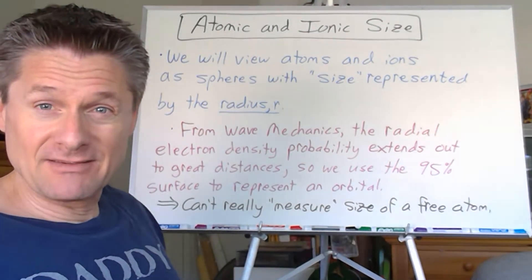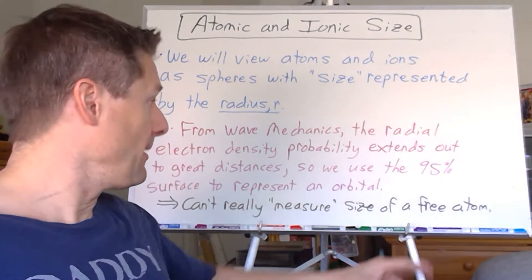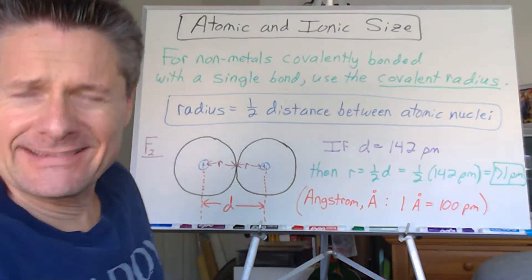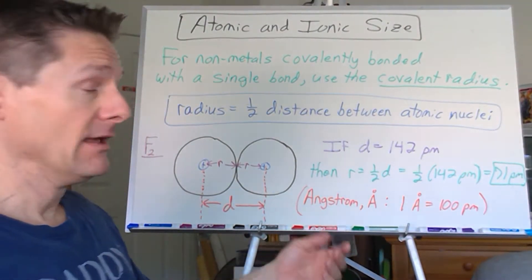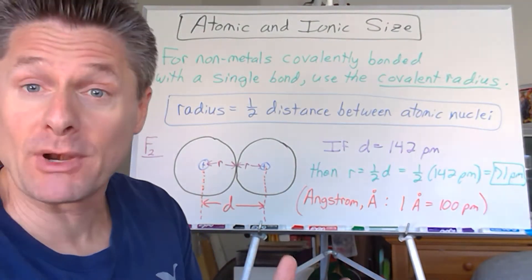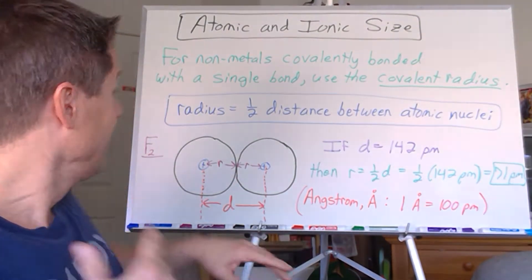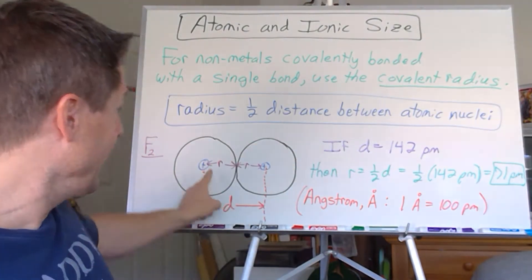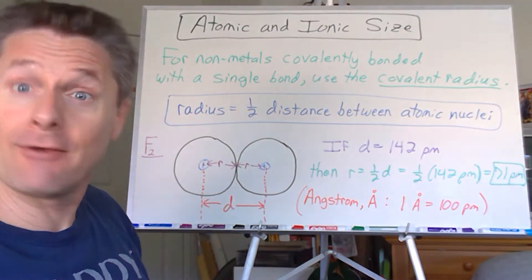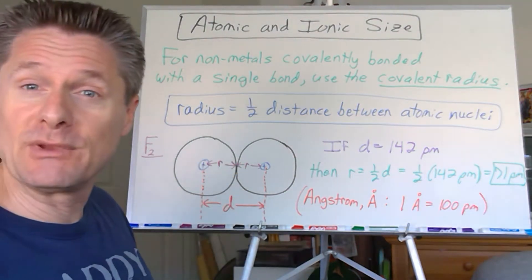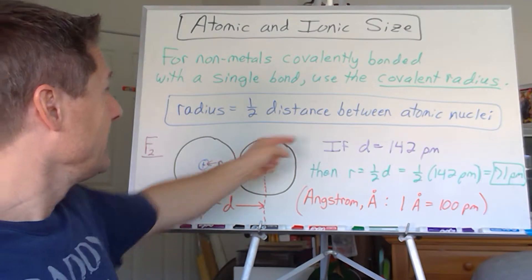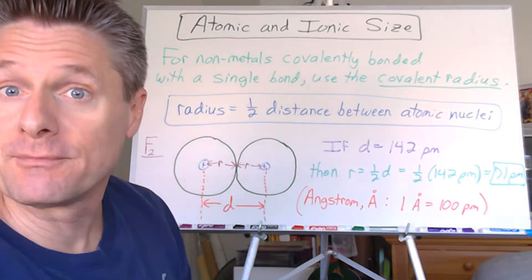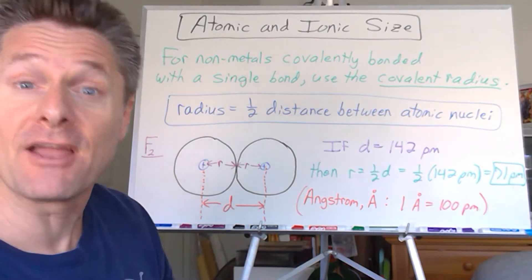We are not going to be able to measure the radius of a free atom directly. So we need other tricks. One straightforward approach uses diatomic molecules — the Magnificent 7: bromine, chlorine, hydrogen, nitrogen, fluorine, oxygen, iodine. Take fluorine, for example. We can go into a lab and measure the distance between the two fluorine nuclei in F₂. We call that D, the internuclear distance. This works for covalently bonded nonmetals. Metals are treated differently since they're not covalently bonded, and ions are handled separately.